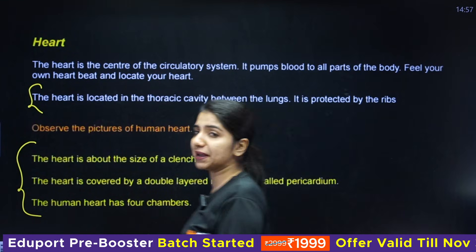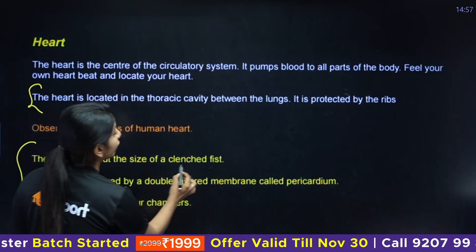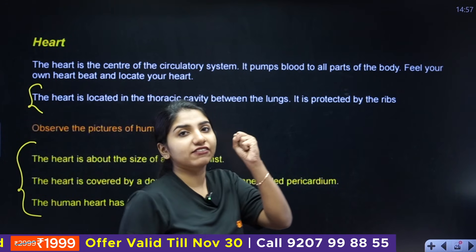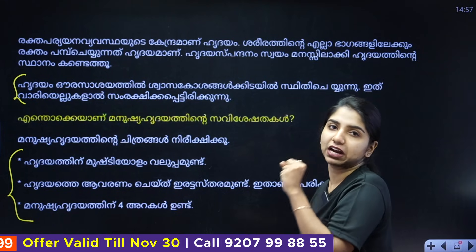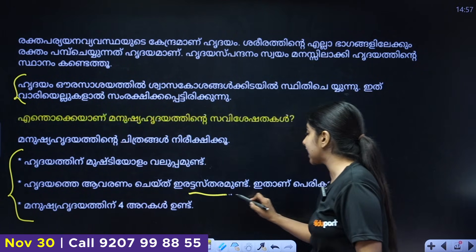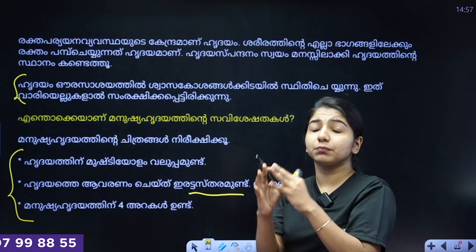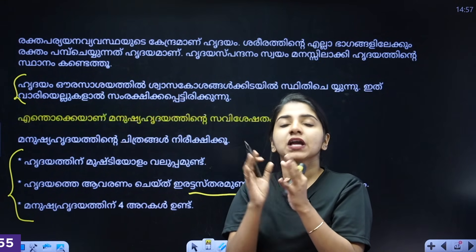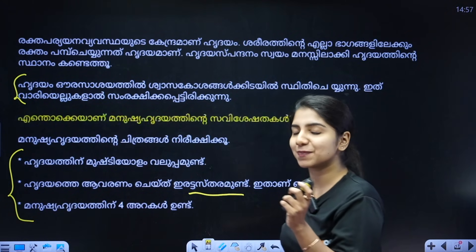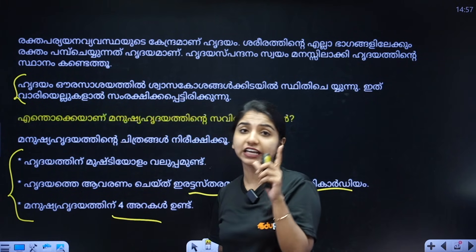The main point is that the heart is about the size of a clenched fist. The heart is surrounded by a double-layered membrane called the pericardium. The human heart has 4 chambers.